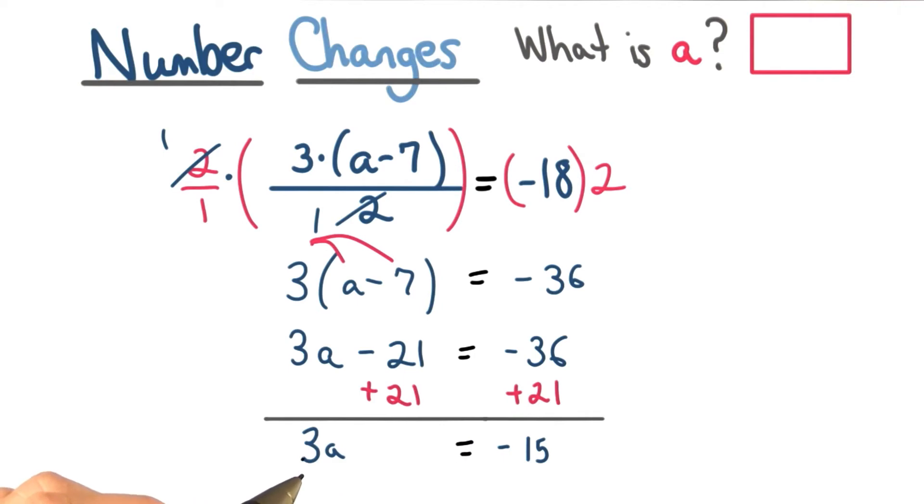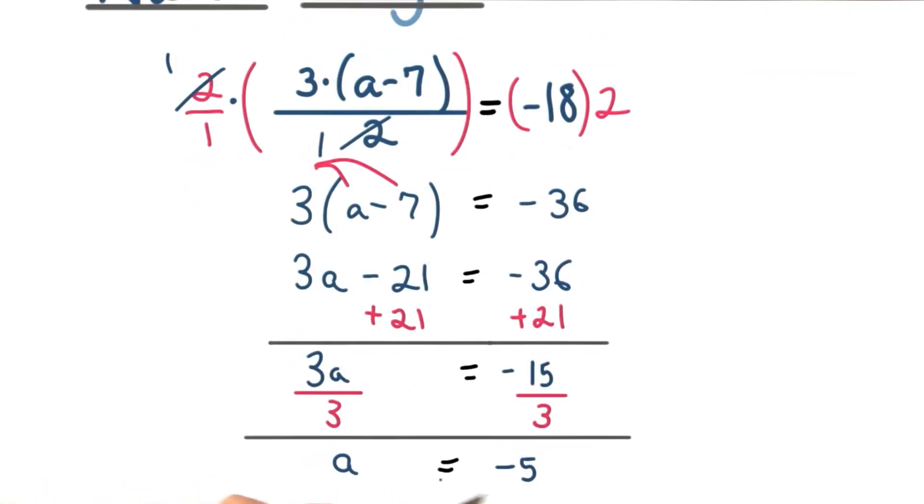Adding 21 to both sides, we get 3a equals negative 15. So for the solution, a is equal to negative 5.